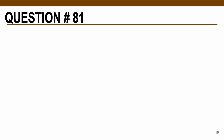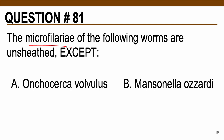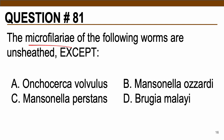Number 81: The microfilariae of the following worms are unsheathed except for — A, Onchocerca volvulus; B, Mansonella ozzardi; C, Mansonella perstans; or D, Brugia malayi. The correct answer is letter D, Brugia malayi. Among the choices, this is the only filarial worm that is sheathed. The sheathed filarial worms to remember are Wuchereria bancrofti, Brugia malayi, and Loa loa — these are all sheathed.